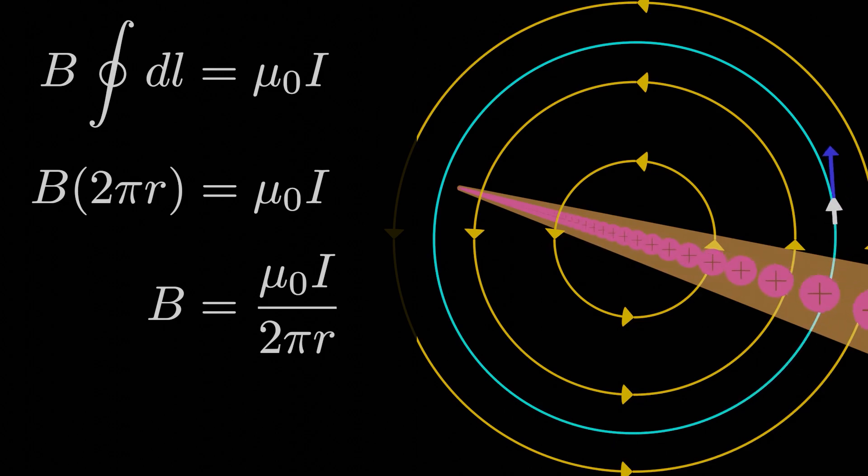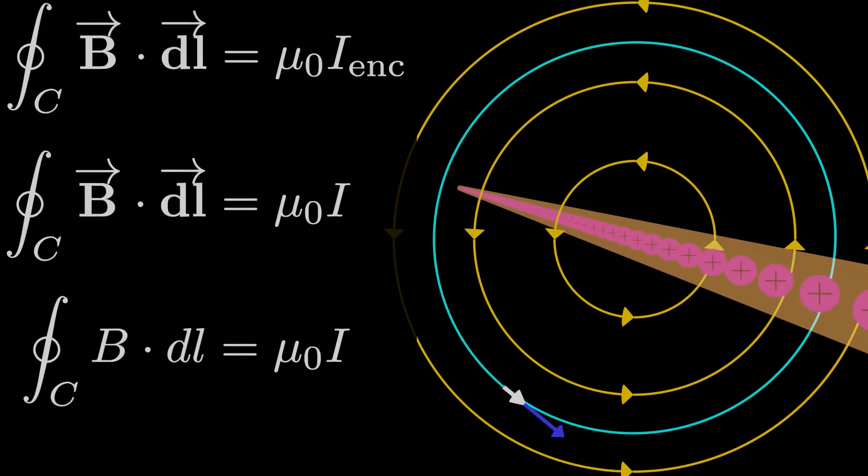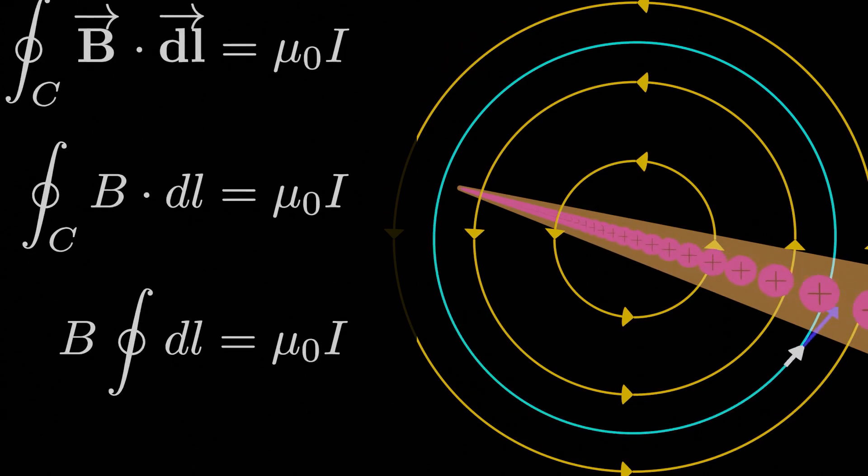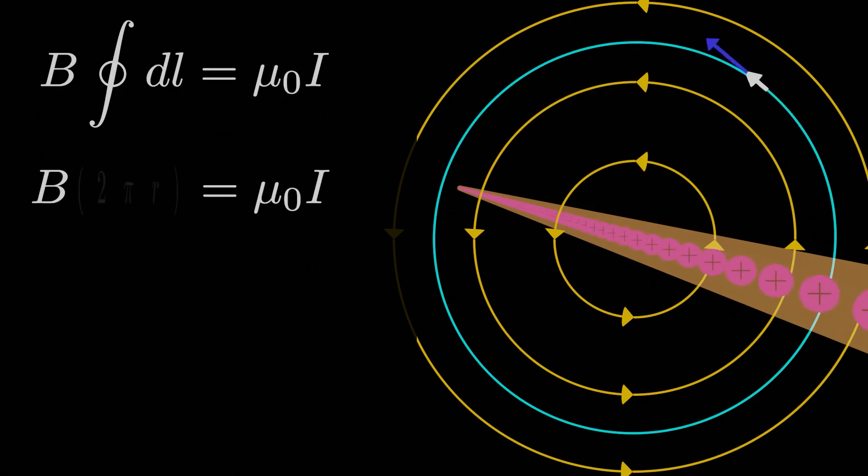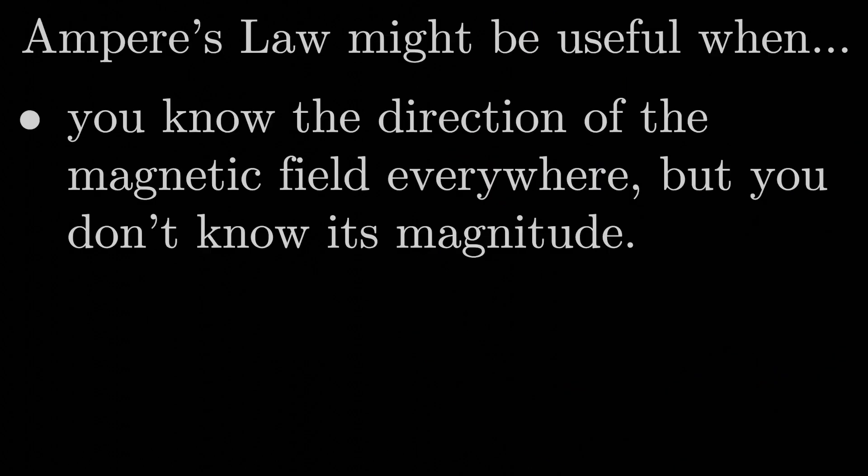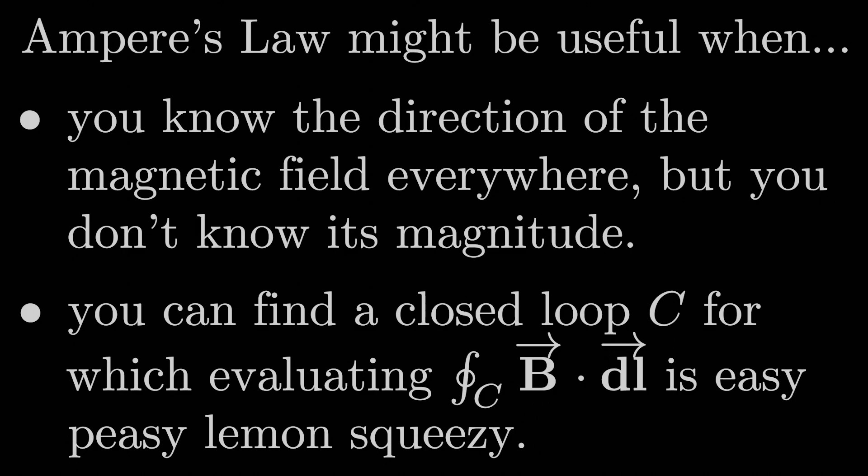Of course, that's the same answer we got from using the Biot-Savart law, but the process was much less nightmarish, because even though we still had to deal with an integral, evaluating the integral was a piece of cake and didn't require any substantial knowledge of calculus. And that's our second key pointer for when Ampere's law is useful. Ampere's law is useful when you can find a loop for which evaluating the closed loop integral of B dot DL is easy peasy lemon squeezy. Evaluating the ampere integral has to be easy. If you find yourself solving some complicated calculus problem like with the Biot-Savart law, you're almost certainly doing something wrong.